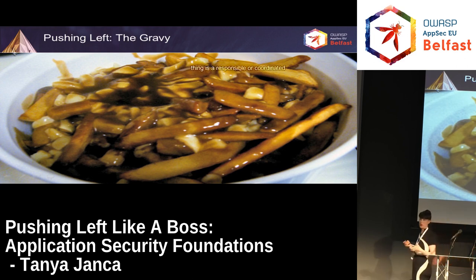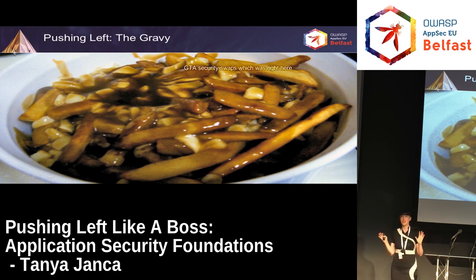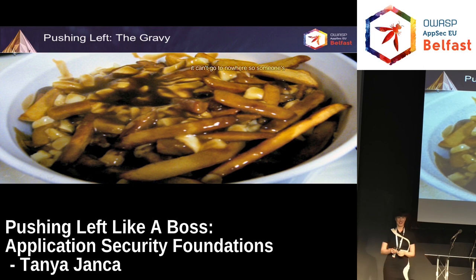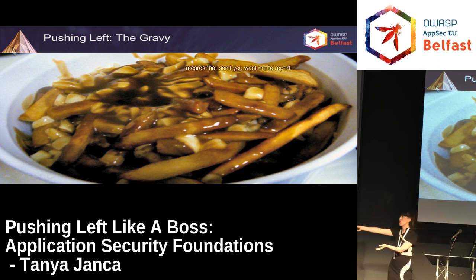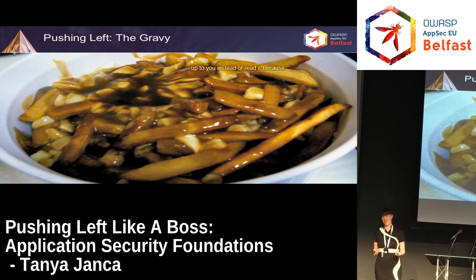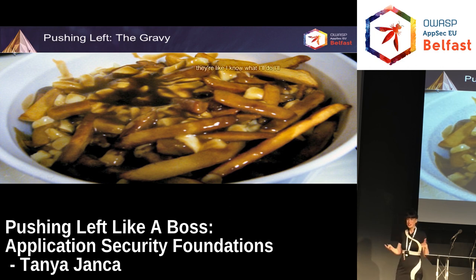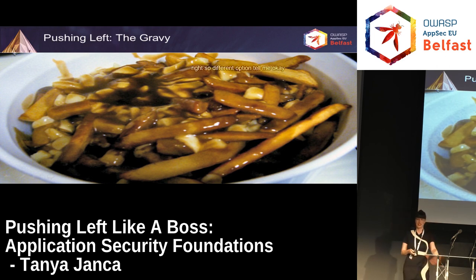Another thing is a responsible or coordinated disclosure program. Or even just put a link on your website that says 'if you see a security bug, please report it here' with an email address — and then actually answer that email. If someone is using your application and they discover that switching a number in a URL gives them someone else's records, don't you want them to report that to you instead of putting it on Reddit? I've seen that happen where they emailed 'contact us,' no one answered, so they tweeted it. Please — give them the option to tell you first.